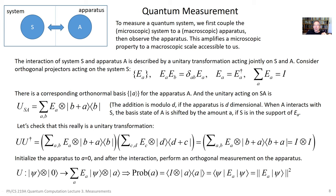If there are d possible measurement outcomes, the apparatus system has dimension d. We could label the basis states by 0, 1, 2, etc., up to d minus 1. By addition modulo d, if we shift by 1, then 1 goes to 2, 2 goes to 3, etc., 0 goes to 1, and d minus 1 goes to 0. So you can think of the d outcomes as being arranged like points on a circle which are cyclically identified — this shift should really be thought of as a shift on a circle.